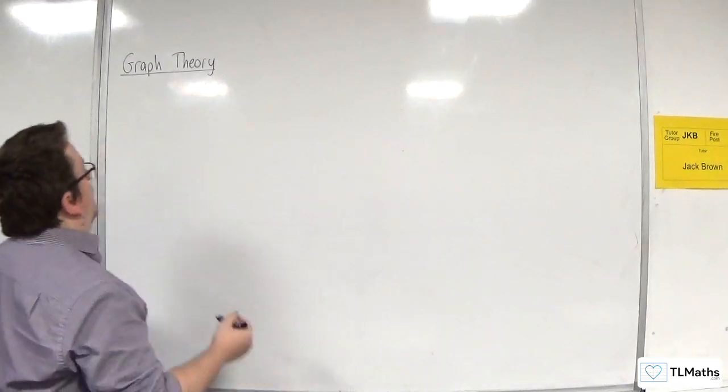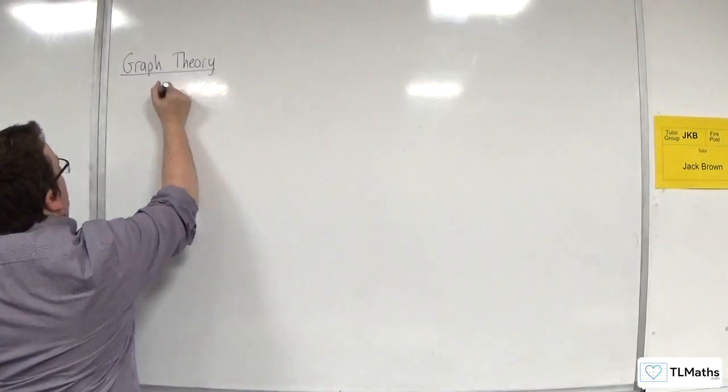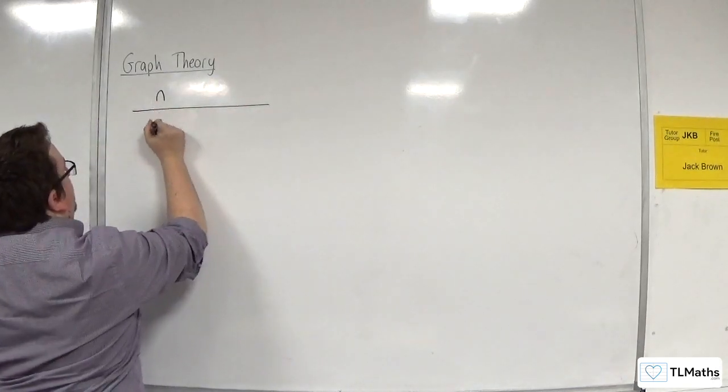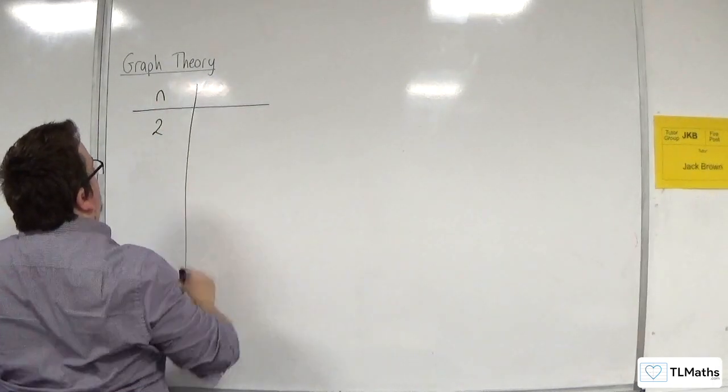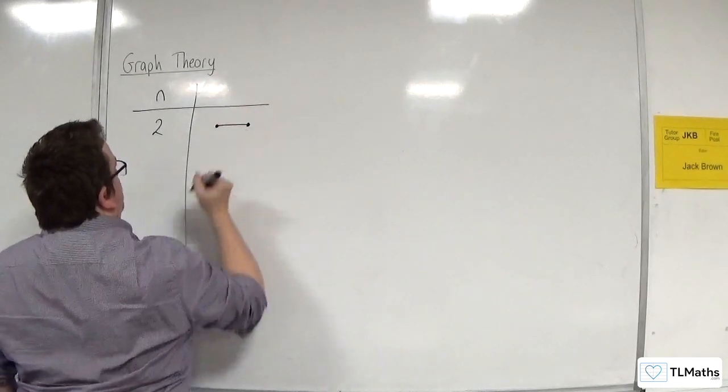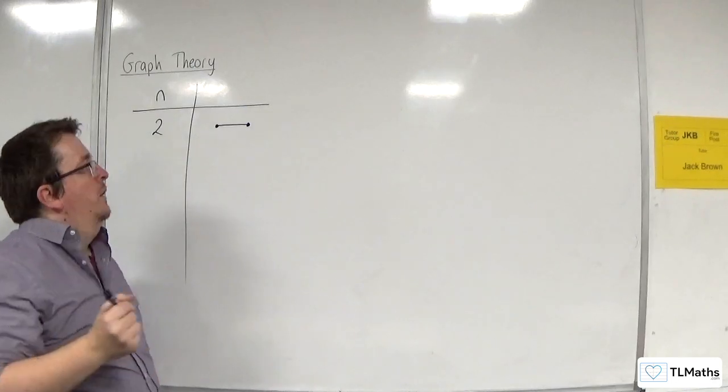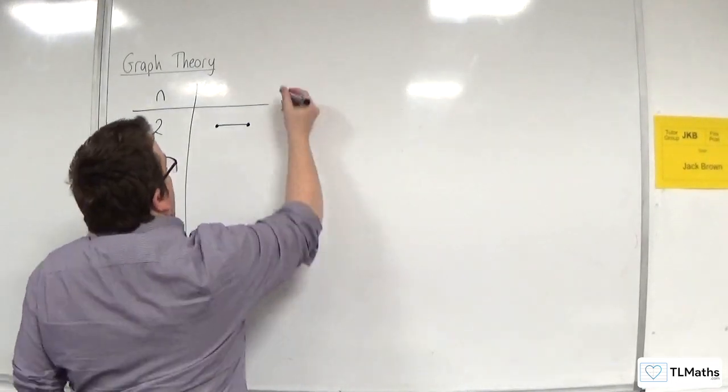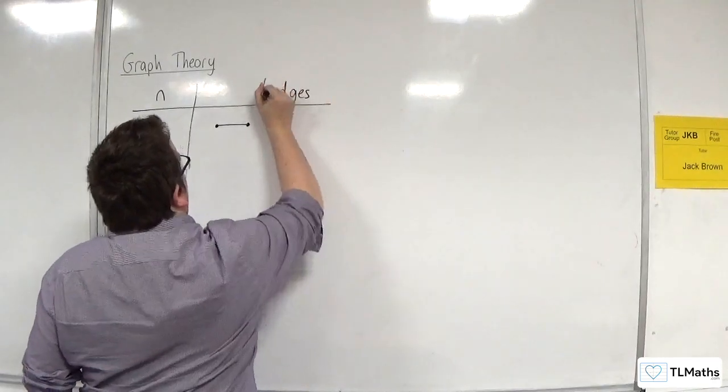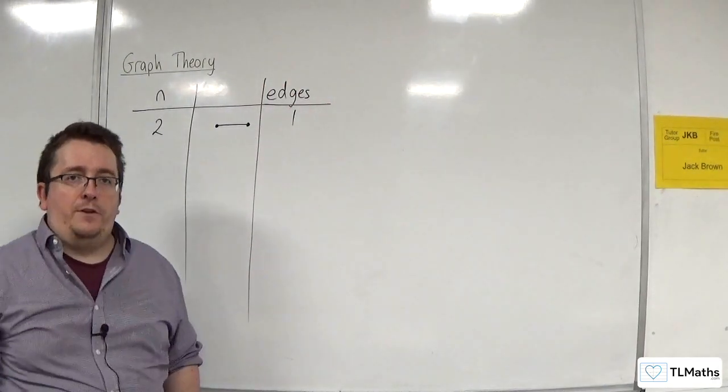So, for example, if you just have, let's say, we have a table and we've got two nodes, then it would look something like this. You've got two nodes and they are directly connected to one another. So, if we looked at the total number of edges that we have, then there would be one edge.